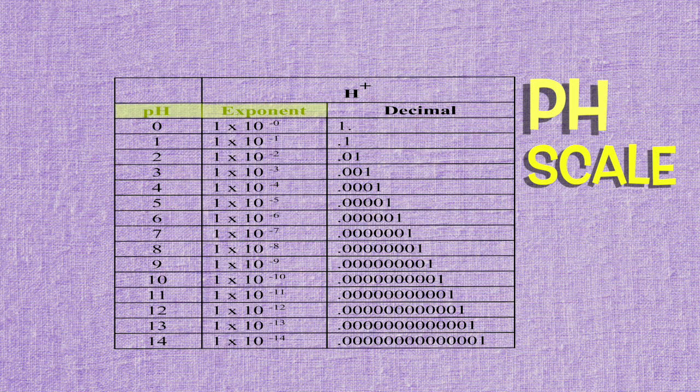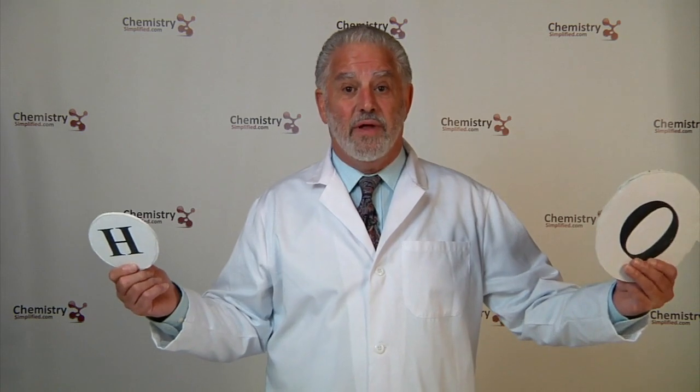pH, exponential notation, and decimal notation are different expressions of the same quantity. pH is only possible because of the ionization of water, and when a water molecule ionizes, it produces one hydrogen ion that's acidic, and one hydroxide ion that's alkaline. The pH of pure water is neutral — not because it doesn't have pH — but because it's 50% acidic and 50% alkaline. It's an equal part of both, and pH is always a balance between acid and alkaline; it's never either/or.